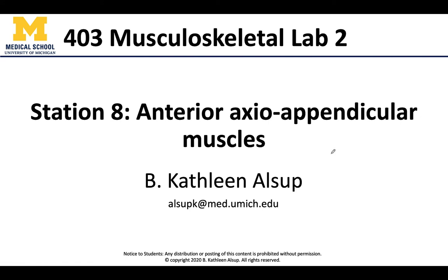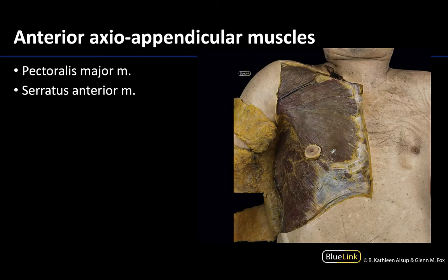Hello anatomy colleagues, this is Dr. Alsup and welcome to station number eight where we are going to discuss some of those axial appendicular muscles, specifically those found on the anterior portion of the body. Axial appendicular means these muscles will have some attachment points on the axial skeleton, but their more distal attachments are going to be associated with the appendicular skeleton — either the scapula or the humerus.